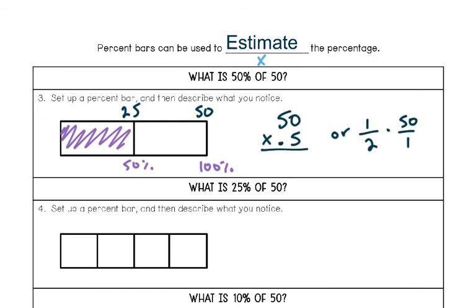You know that 'of' means times. This is a visual way to look at it, but you could also solve this a few different ways. Since fractions, decimals, and percents are the same thing, you can look at this as 50 times 0.5, or one half times 50, or 50 divided by 2. So now we have a lot of tools in the toolbox for how to solve percent problems.